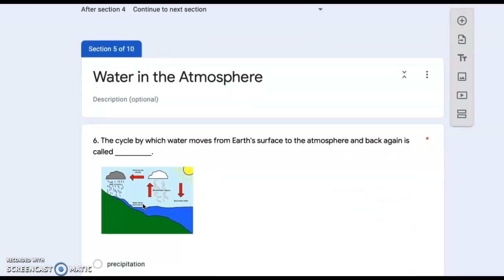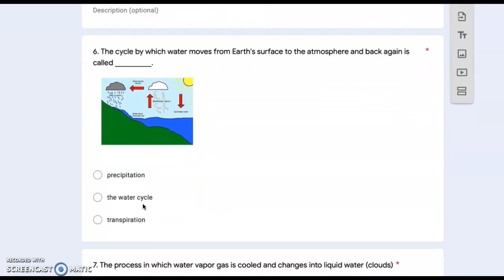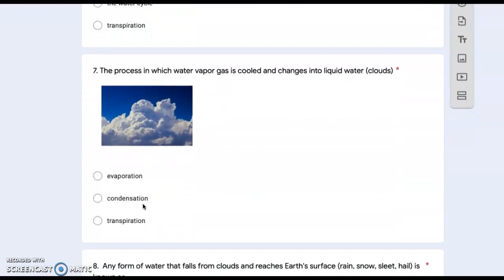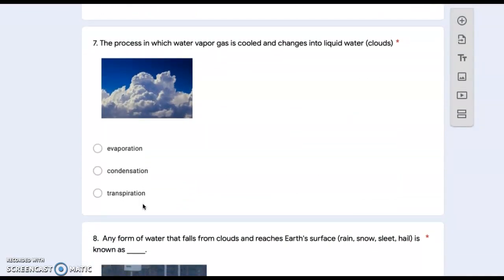Water in the atmosphere. Number six: the cycle by which water moves from Earth's surface to the atmosphere and back again is called precipitation, the water cycle, or transpiration? Number seven: the process in which water vapor gas is cooled and changed into liquid water clouds is evaporation, condensation, or transpiration?